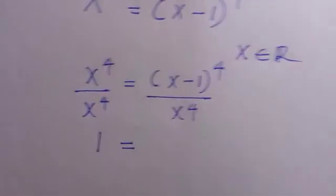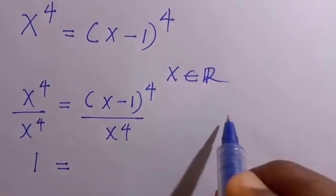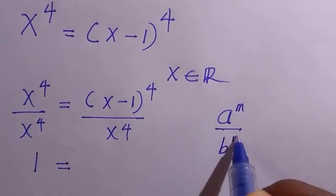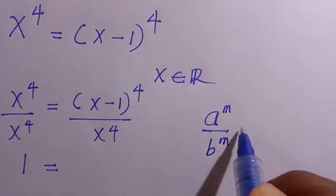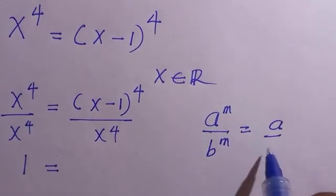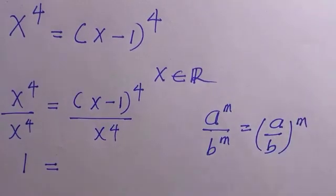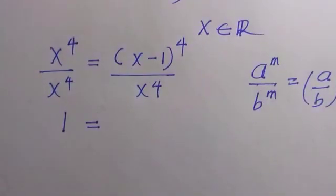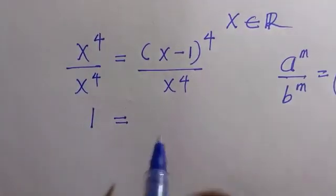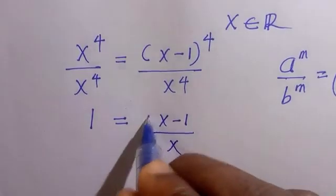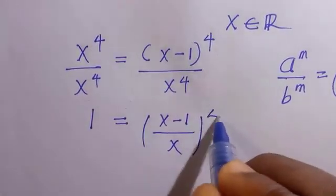For this, if you consider the rule of indices, which says a to the power m divided by b to the power m, we can have this as (a divided by b) all to the power of m. By applying it here, we have (x minus 1) divided by x all to the power of 4.